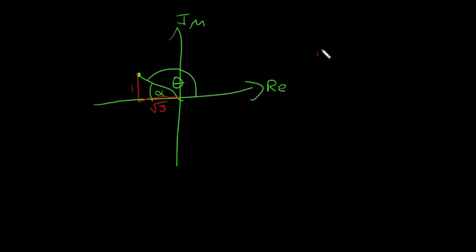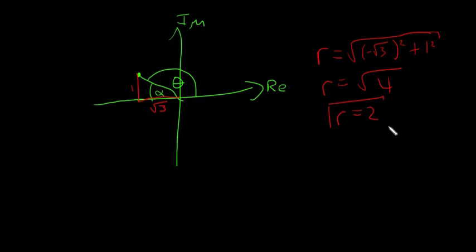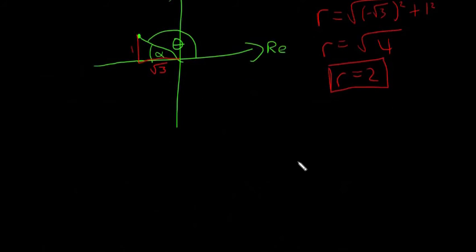So I'll calculate r first. We're going to say r is the square root of (minus the square root of 3) squared plus 1 squared, which the minus doesn't actually matter. It still ends up being the square root of 4, which is equal to 2. So r is equal to 2, so that's our length here. And now we need to find the argument, we need to find theta.